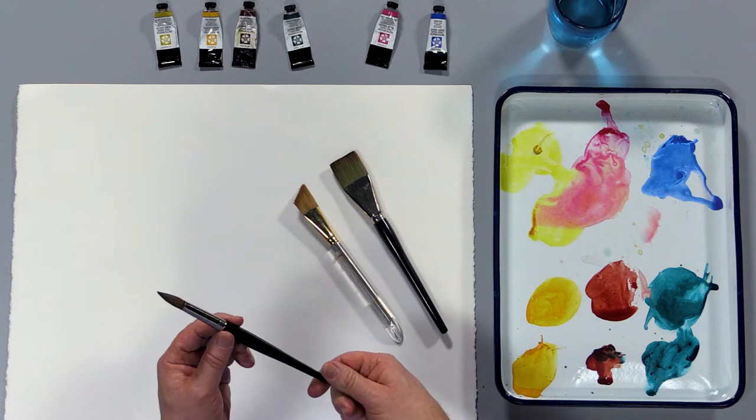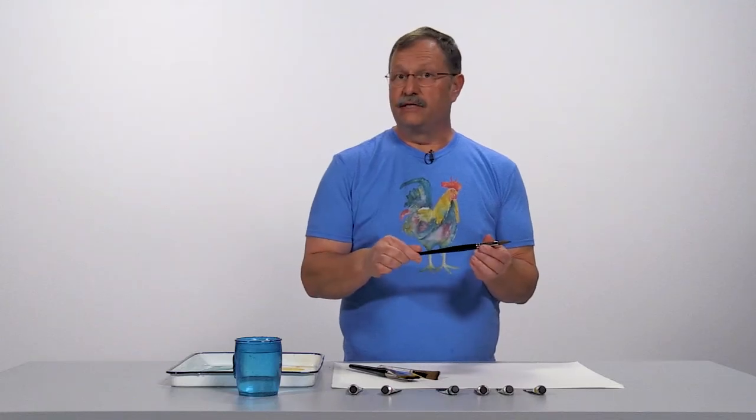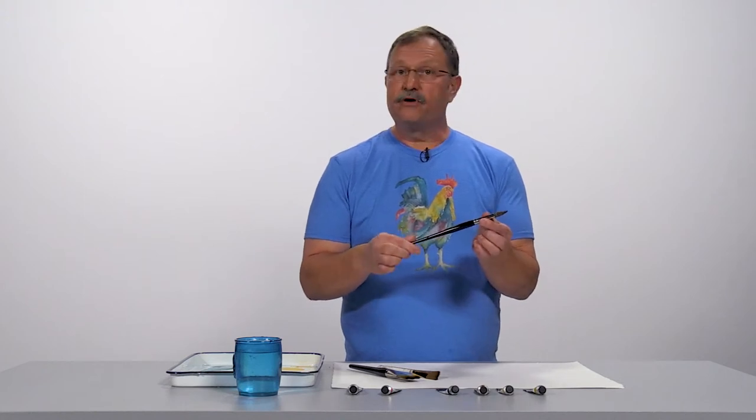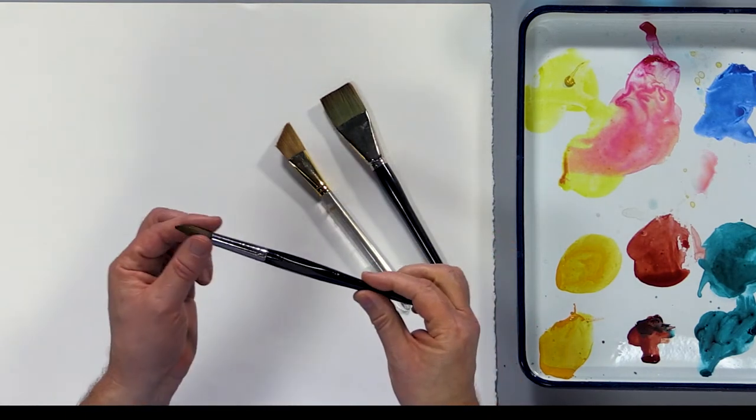These come in different sizes from very small number 4, number 6, up to very large number 20s and number 40s. This is a number 14 round. They come in different price ranges from cheap to very expensive.